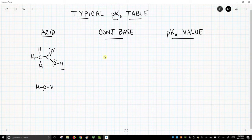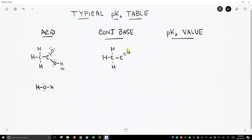So we'll draw the conjugate base in a pKa table. They normally show you the conjugate base. So here's our structure. I'm drawing the full Lewis dot structure for this.